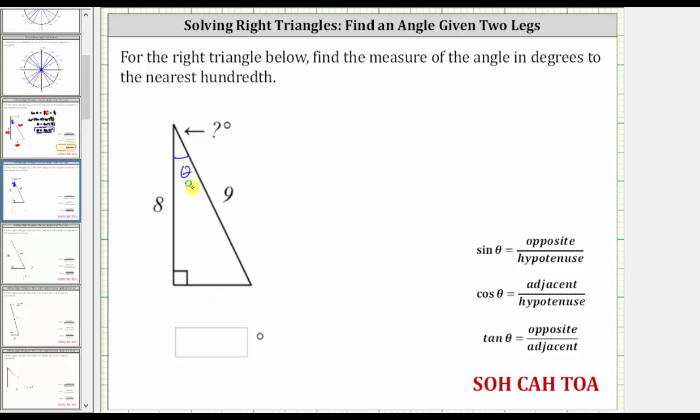So if this is the angle theta, then this side here is the opposite side with an unknown length. The hypotenuse is always opposite the right angle, and therefore the hypotenuse is this side here with length nine units.